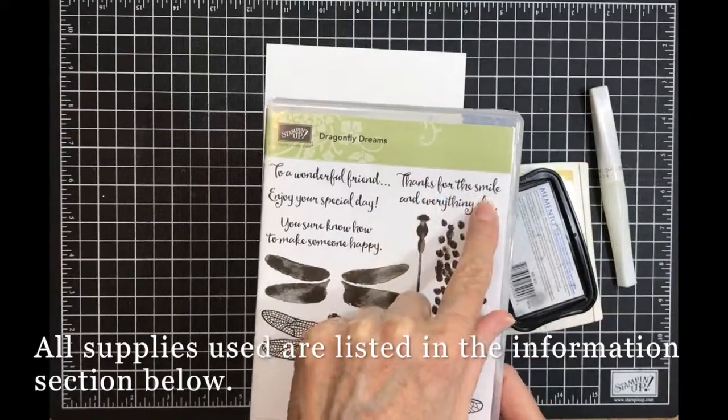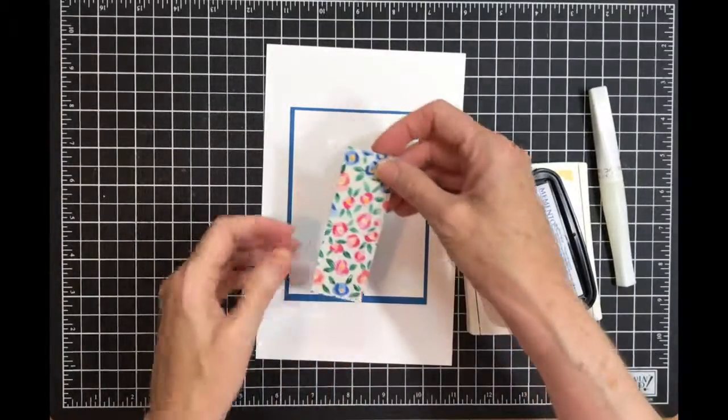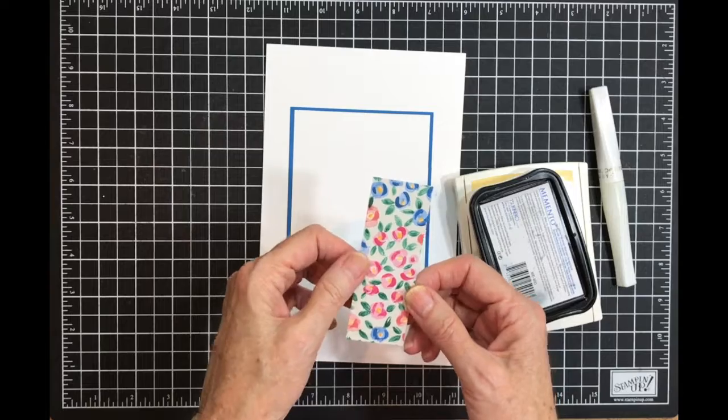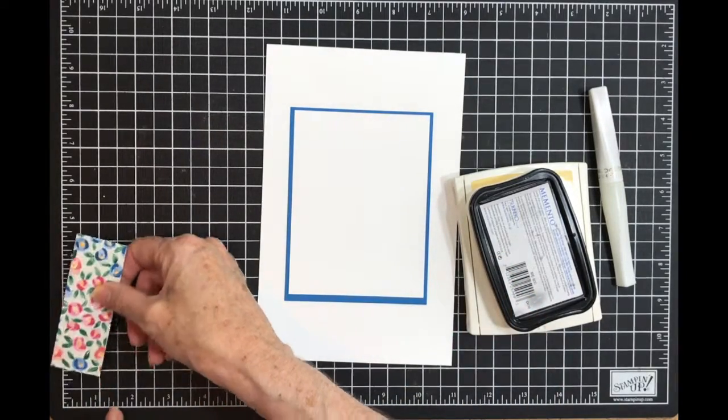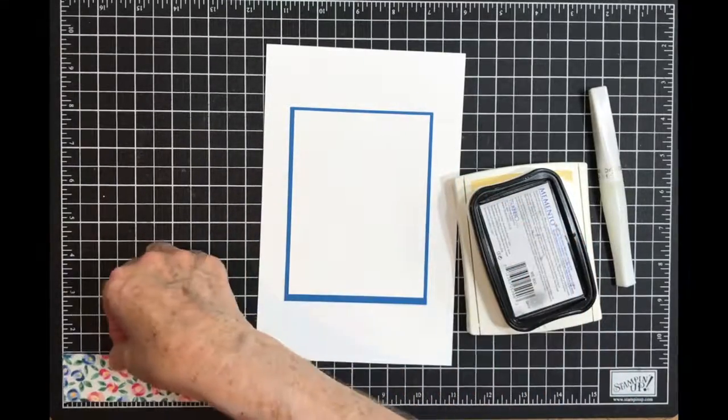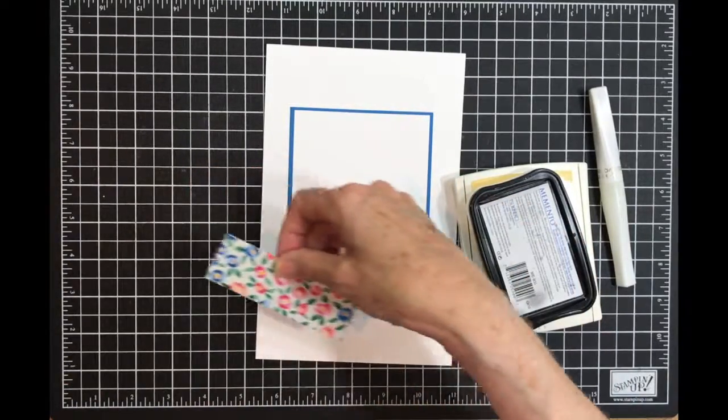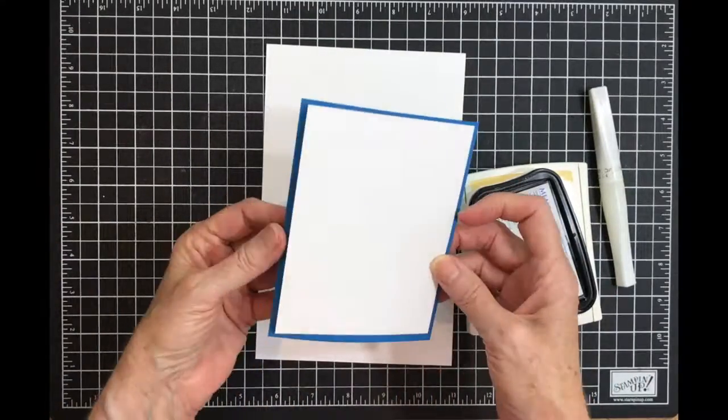And everything else. I have a piece of the Garden Impressions designer series paper, and this is actually one and three-eighths by three and three-fourths. I have a piece of Whisper White for the top, and it is actually three and three-fourths by five.